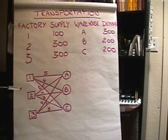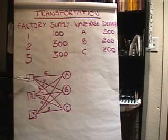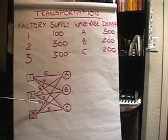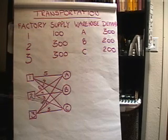Let's assume that we've also got some cost data. It costs five dollars to ship a unit from factory one to A, four dollars to go from one to B, three dollars to go from one to C, eight, four, three, and nine, seven, five respectively between two and three, and A, B, and C.